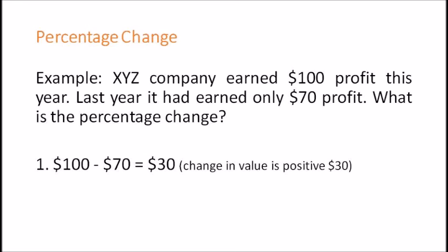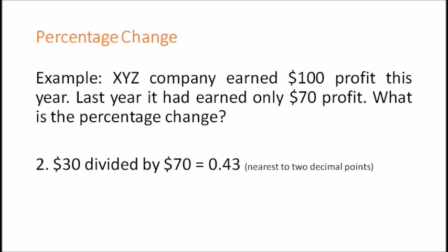Okay, so that's the first step. And it's the same with the formula as well, the new value minus the old value. Now once you've done that, you've got $30. So the second step is you need to divide the $30 by the old value. So the old value is still $70. So $30 divided by $70 will give you 0.43, and that's nearest to two decimal points.